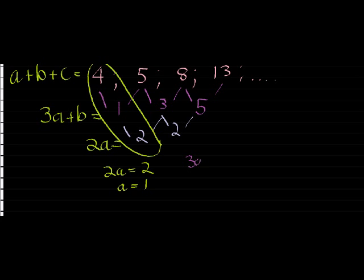If 3a plus b is equal to 1, and a is equal to 1, then 3 times 1 plus b is equal to 1, and we get b is therefore equal to negative 2. So 3 gets subtracted on both sides.